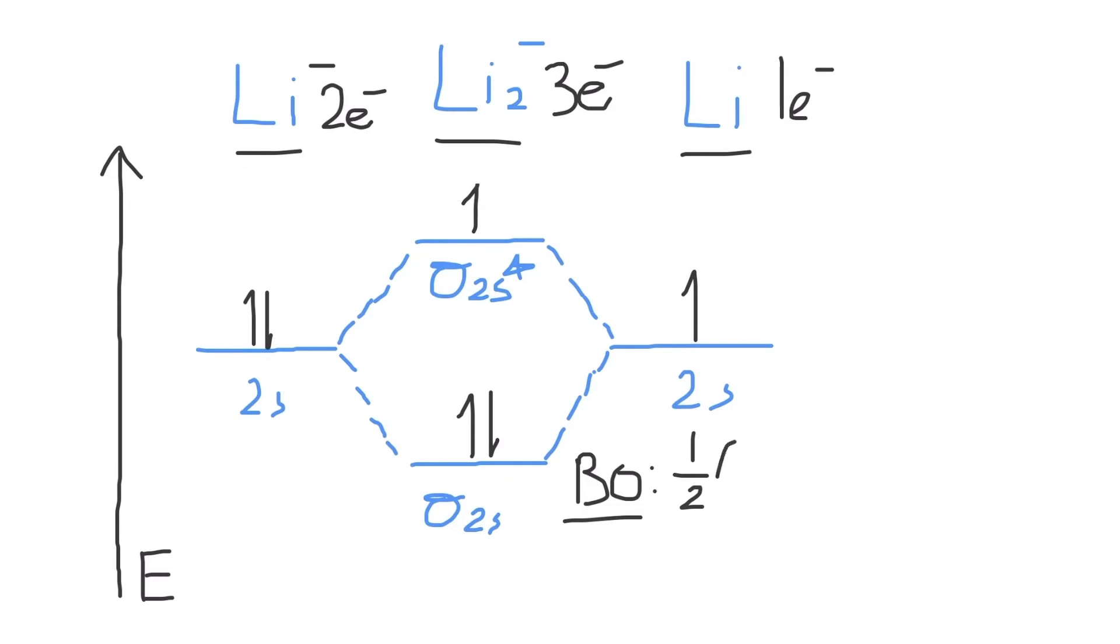It is equal to one half of the number of bonding electrons found in the sigma 2s bonding molecular orbital minus the number of antibonding electrons present in the antibonding molecular orbital.